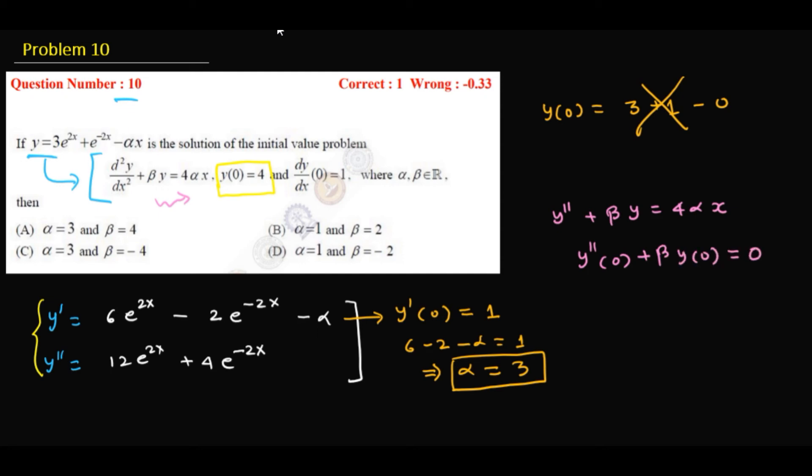Y''(0) is 12 plus 4, that is 16. So this is 16 plus beta, and y(0) is 4, so we are getting beta equals to -4. That's it, so beta = -4 and alpha = 3.